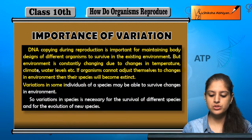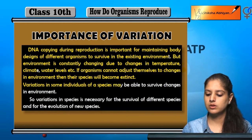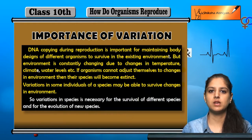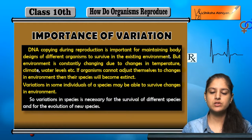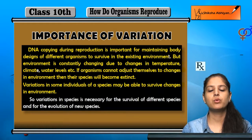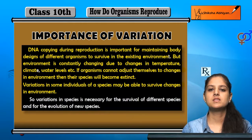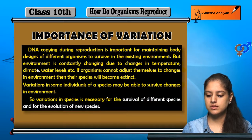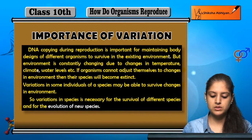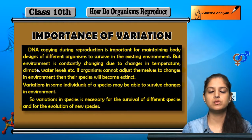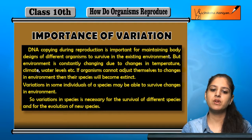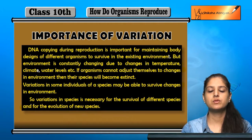Isil liye variations, kuch individuals mein, kisi ek species ke andar, woh help karte hain unko environment mein survive karne ke liye. Toh yeh variations kya hote hain? New species mein jo aate hain, woh unko new climate change mein survival ke liye help karte hain. So, variations in species is necessary for the survival of different species and for the evolution of new species. New species evolve hon, aur jo species hain woh survive kar payen — isil liye jo variations hain, woh species ke andar important hain.